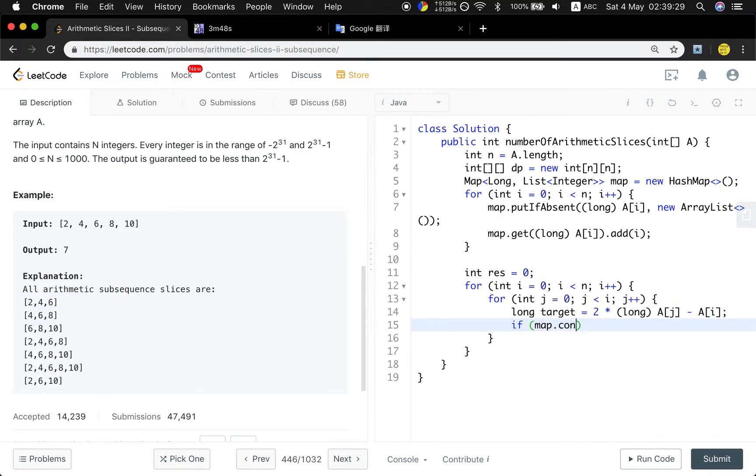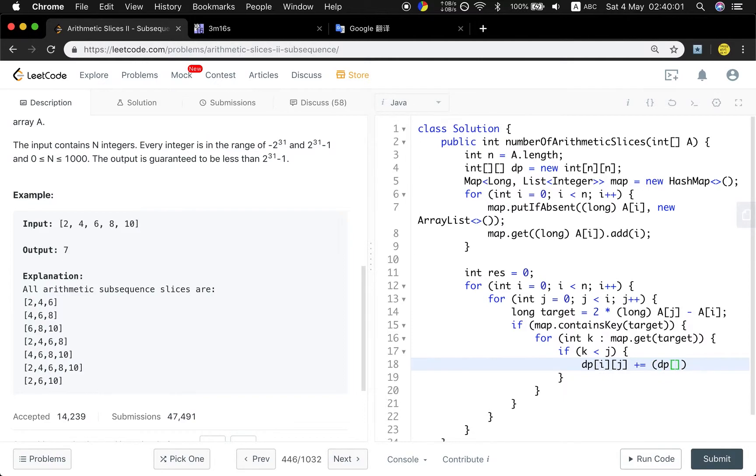So if the map contains key, the target. If we have this number in our map, for every index, right? So for k in map.get the target. So if k less than j, we know we can make up arithmetic slices. So dp[i][j] will equal to dp[j][k] plus 1. So this means the total number of arithmetics we can make up ended with the number k and number j. This is the number j and the number i.